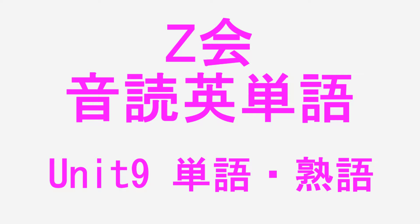Section 33. Bark（ほえる、ほえる声）、Cattle（ウシ）、Lawn（芝生）、Nest（巣）、Root（根、根元）、Seed（種）、Tail（尻尾）。